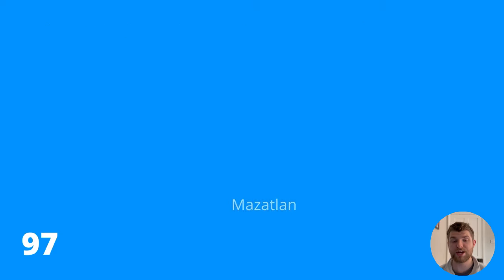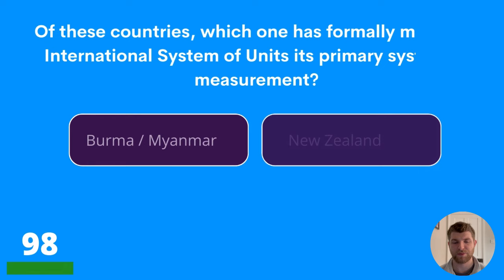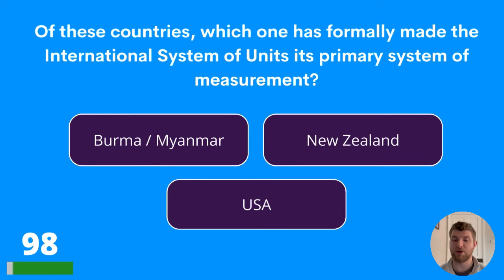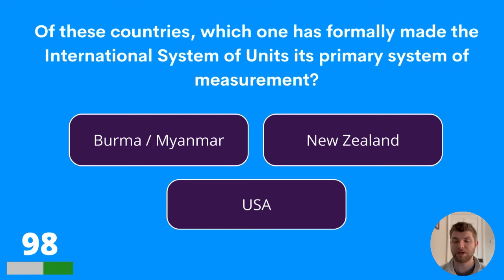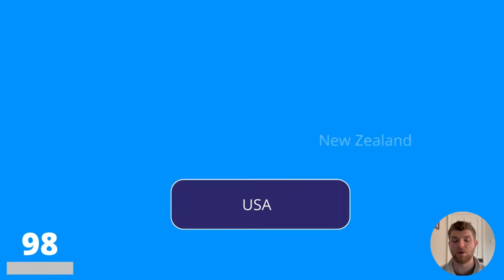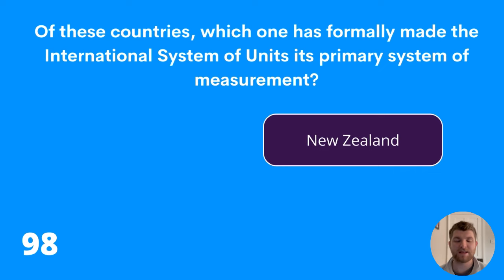Question ninety-eight: of these countries, which one has formally made the international system of units its primary system of measurement? Burma or Myanmar, New Zealand, or USA? The answer is New Zealand.